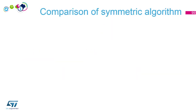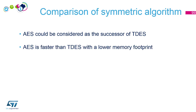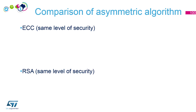I want to give you some comparison between algorithms. For the symmetric one: AES is considered the successor of Triple DES — it is faster and with a lower memory footprint, but if your system already has some 3DES you have to use it. For the asymmetric algorithm we will compare elliptic curve and RSA.